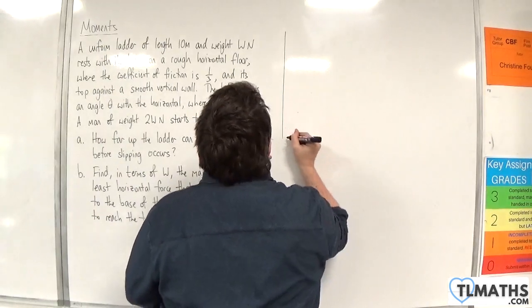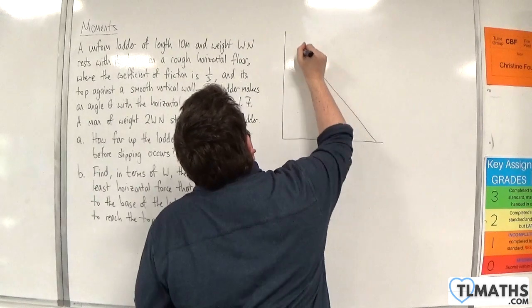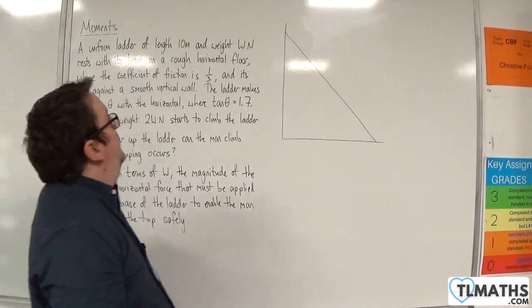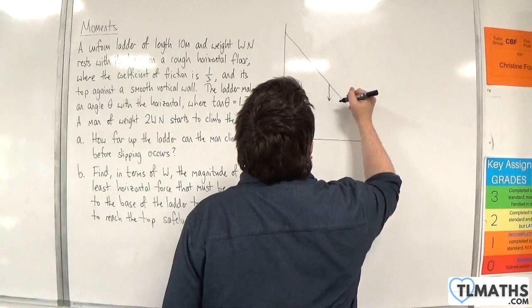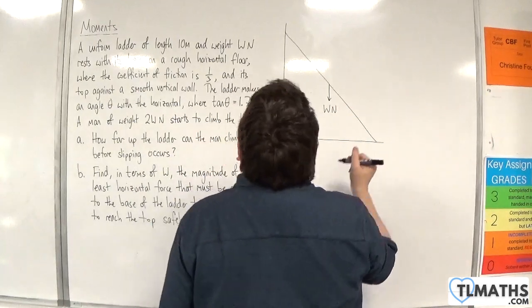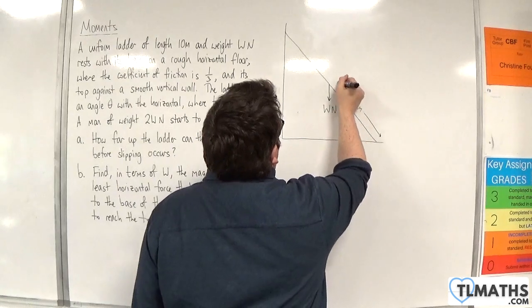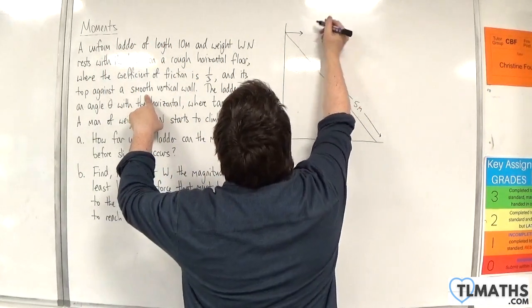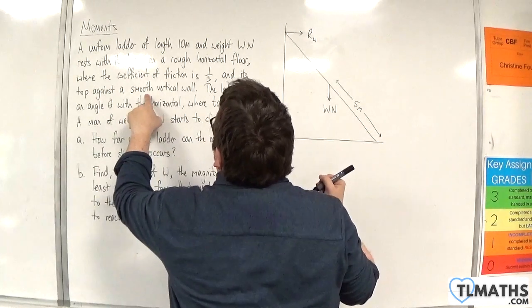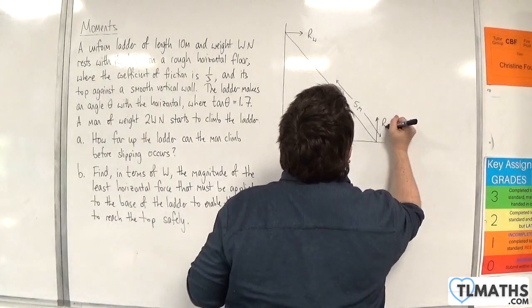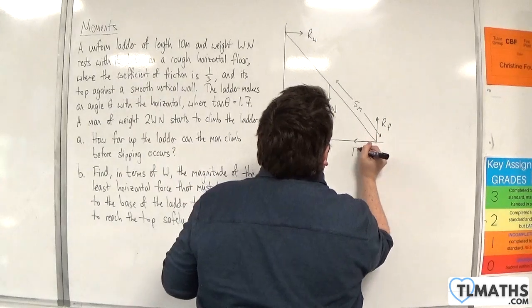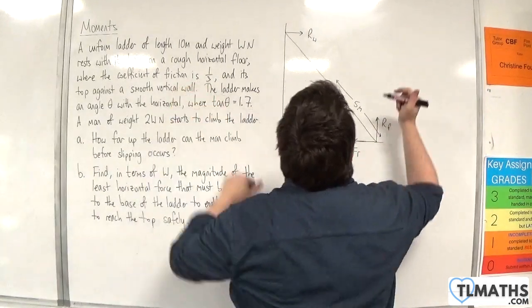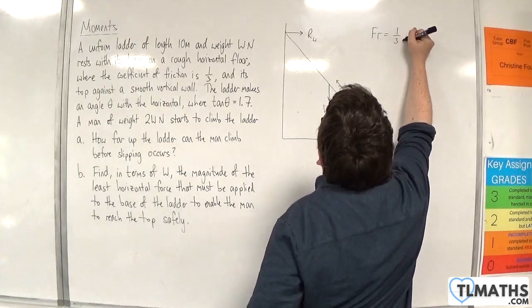Let's draw a diagram. Here is the wall, here is the floor, and there's the ladder. It's a uniform ladder of length 10 metres and weight W Newtons, so the weight will act through the centre — W Newtons — and this will be 5 metres, with the full length being 10 metres. The wall is smooth, so there will be a normal reaction force R_W but no frictional force. The floor is rough, so there will be a normal reaction force R_F and a frictional force acting to the left.